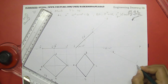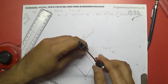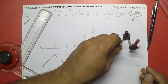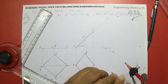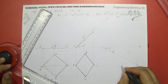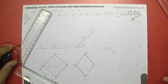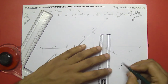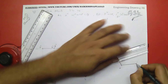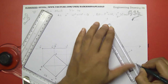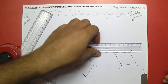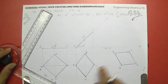Now we have to reproduce the same figure over here. This would be D and this would be B. And this would be A and this would be C. Let's complete the figure. We have reproduced the same figure over here.